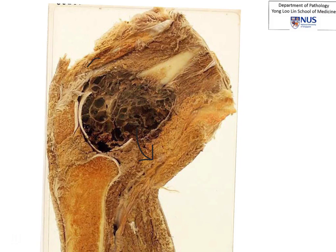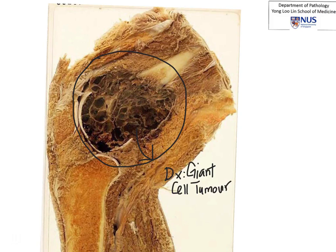This appearance is very classical for a giant cell tumor. Why is it classical? Because it affects the epiphyseal and metaphyseal part of the bone. It is often juxta-articular, as you can see here. It is also often expansile and hemorrhagic. Another classical feature is the age of the patient. In terms of the whole clinical picture, this would usually affect patients who are skeletally mature, probably in the 20s to 30s — usually quite young adults.